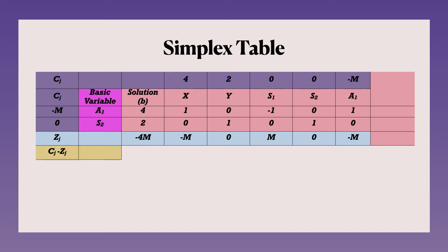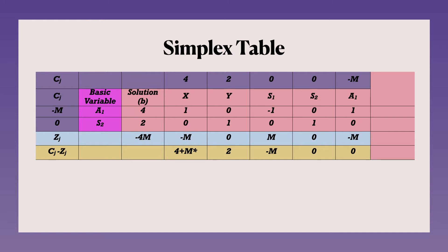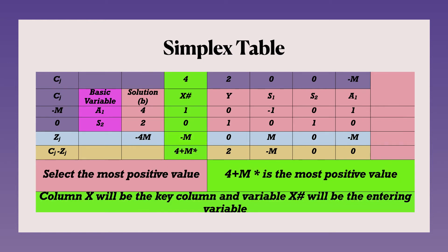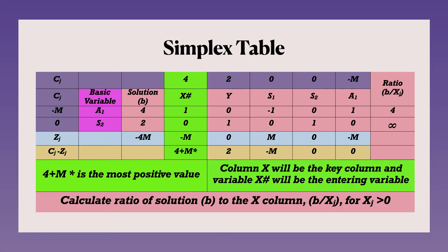Calculating Zj and Cj − Zj: Cj − Zj values are 4+M, 2, −M, −M, 0. As per the rule, the most positive value is 4+M, so the x column becomes the key column and x becomes the entering variable. To decide the leaving variable, we calculate the ratio of solution values to the key column elements. First ratio = 4/1 = 4; second ratio = 2/0 = infinity. So the least positive ratio is 4, making the first row the key row. The key element is 1.